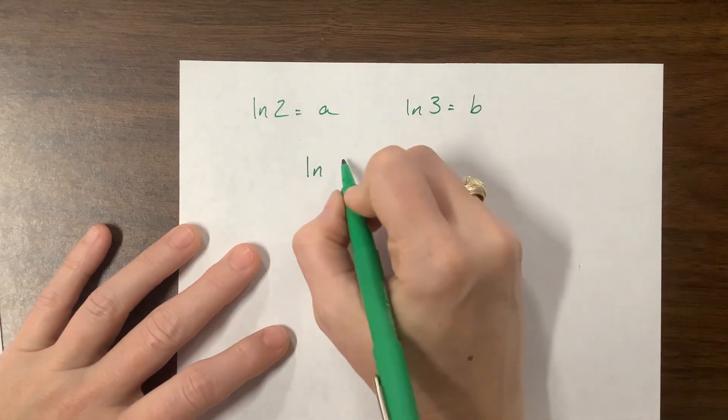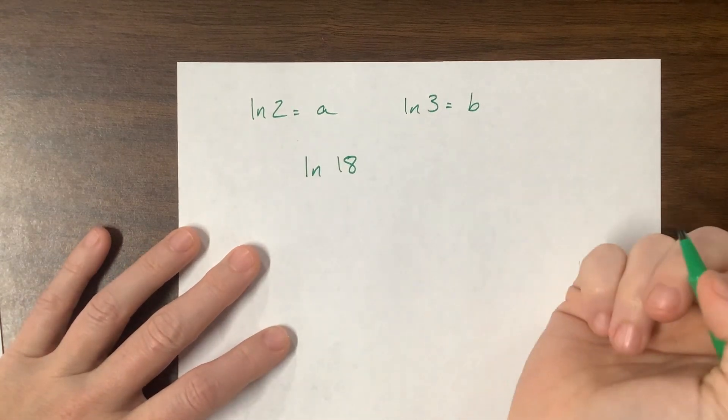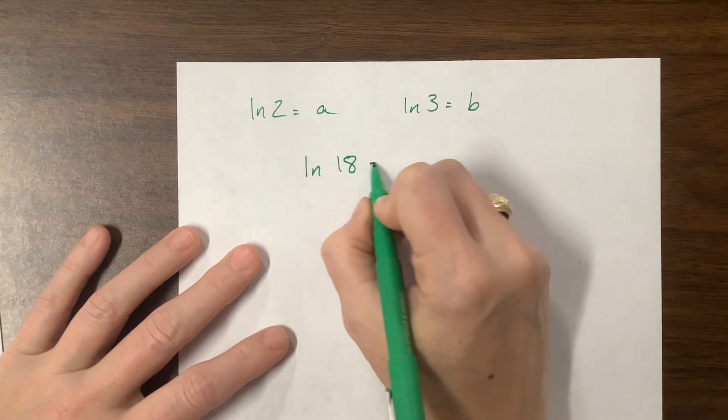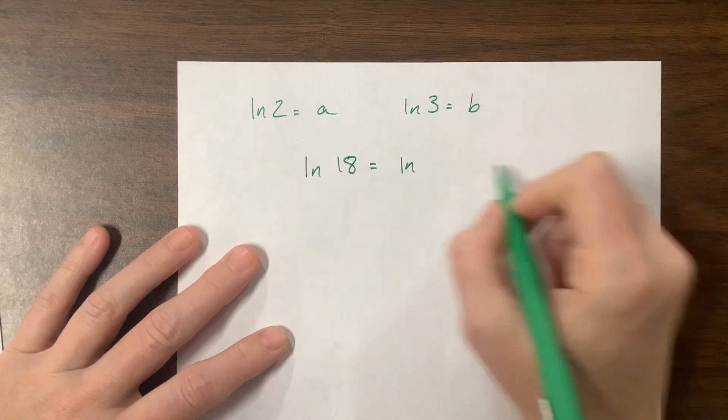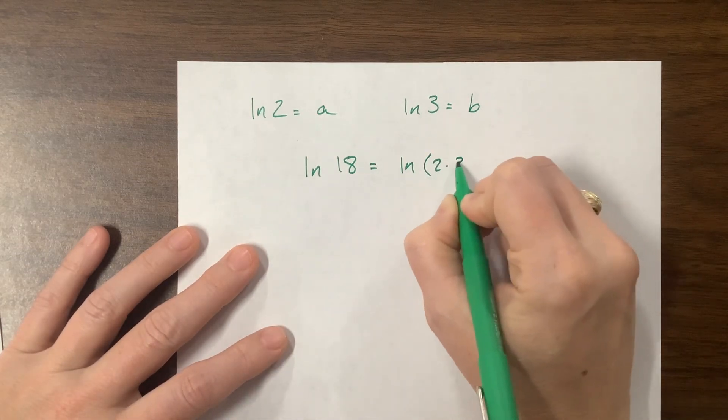Express the natural log of 18 in terms of A and B, is what the directions would say. Well, so what I know is that this is the natural log of 18 is 2 times, well, 3 squared. 2 times 9 is 18. 9 is 3 squared.